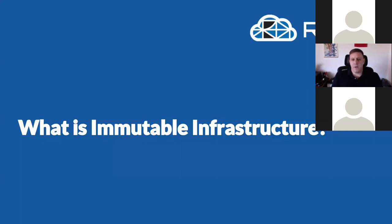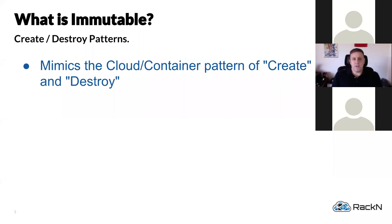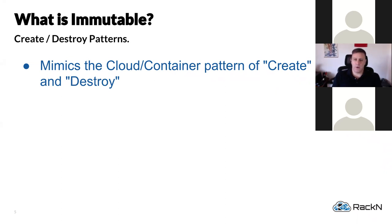A lot of people have different ideas about what immutable infrastructure is, and for the most part all of those differing views are probably right. We like to level-set on what we mean. For us, immutable infrastructure is essentially replicating the cloud and container pattern — the create, destroy, recreate pattern. In cloud or containers, you create an AMI, a QCOW, a VMDK, or a container image of some sort, bake in a bunch of stuff, deploy it, and when you're done, destroy it and spin up a new version with updated pieces.